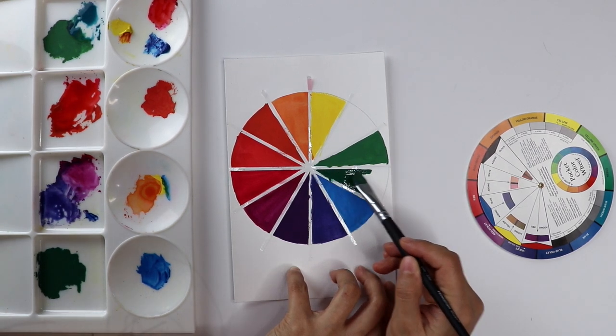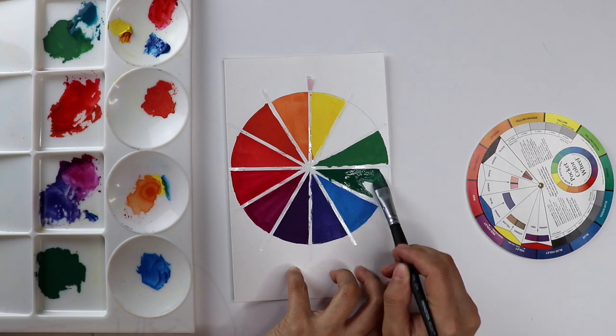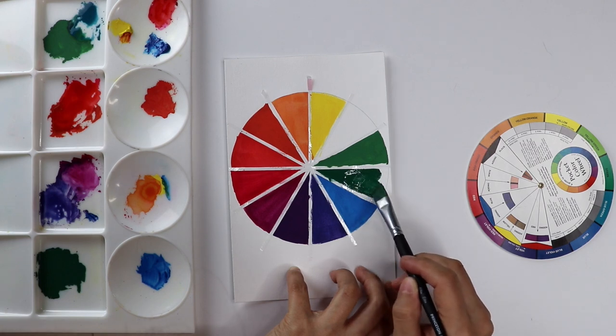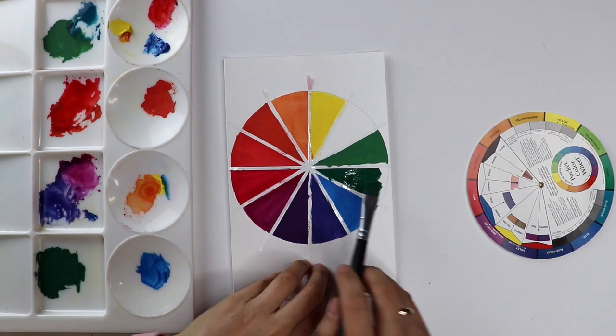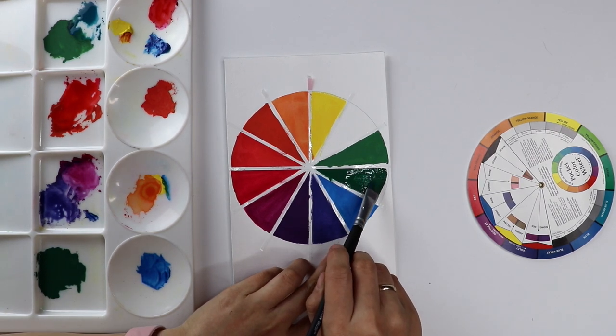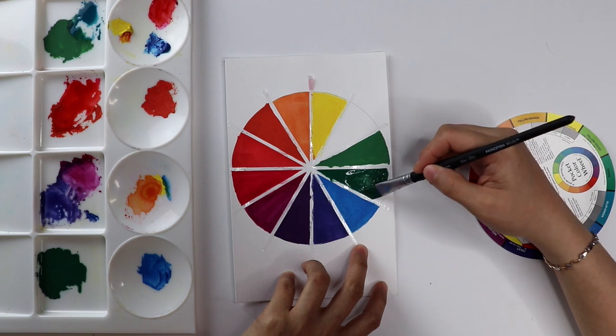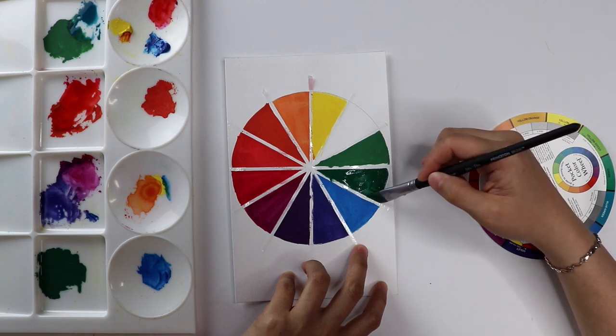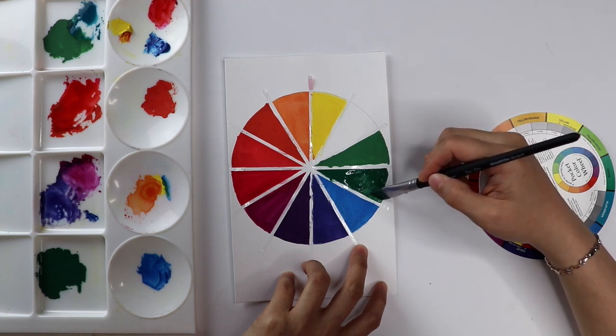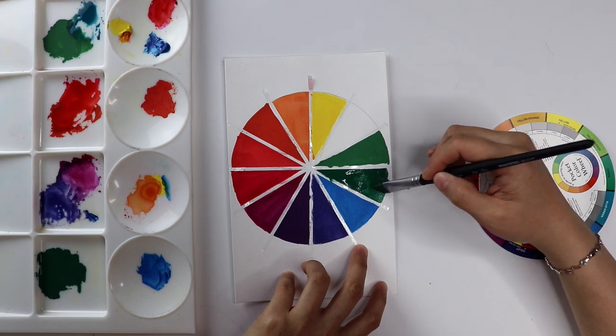When you finish the color wheel, it might look very different from the commercialized standard color wheel, which is very normal. Each pigment from different companies behaves differently. That's why we need to spend some time playing with them and really understand their properties.